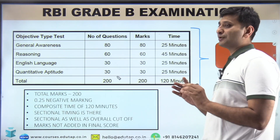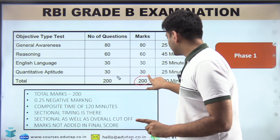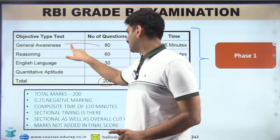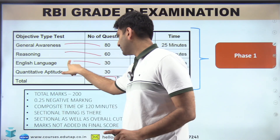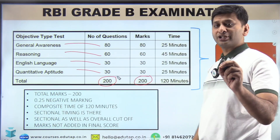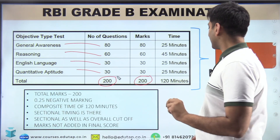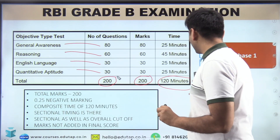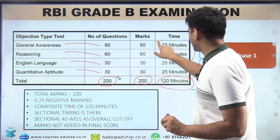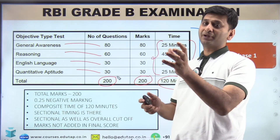In phase one, there is one paper of 200 marks with 200 questions: 80 questions from GA, 60 from reasoning, 30 from English, and 30 from quantitative aptitude. Each question is one mark. There is a negative marking of one-fourth. Total time given is 120 minutes, further divided into sectional timings, which makes it a little tricky.